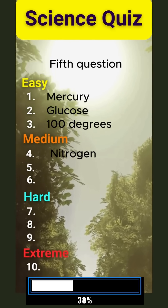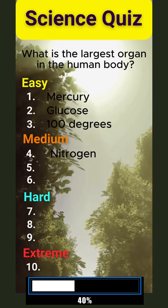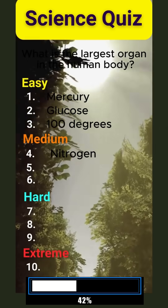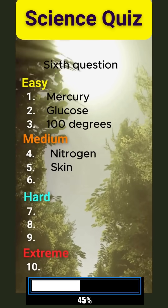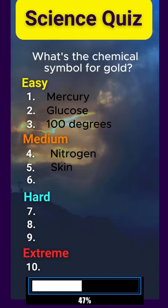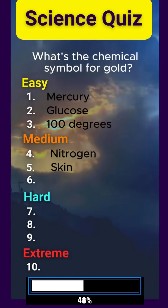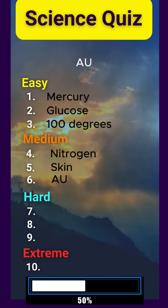Fifth question. What is the largest organ in the human body? Skin. Sixth question. What's the chemical symbol for gold? AU.